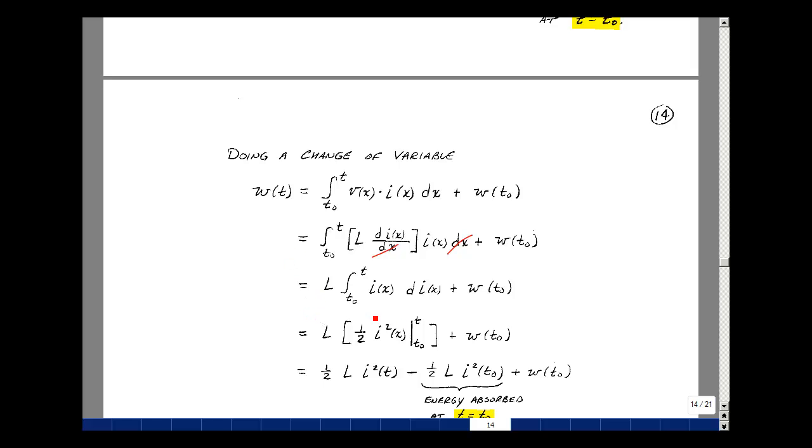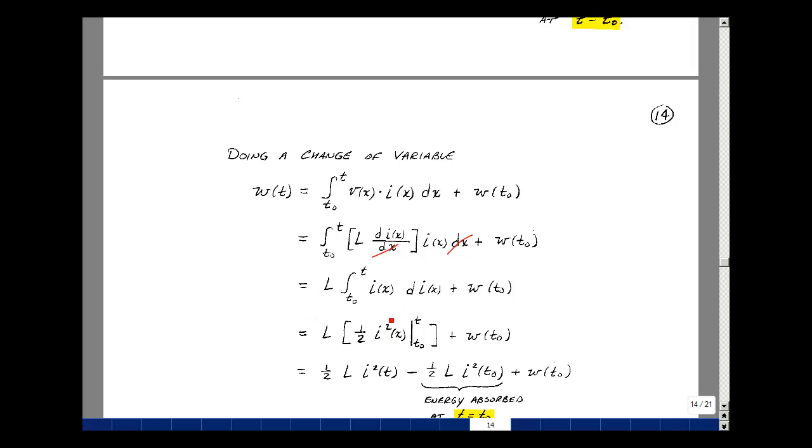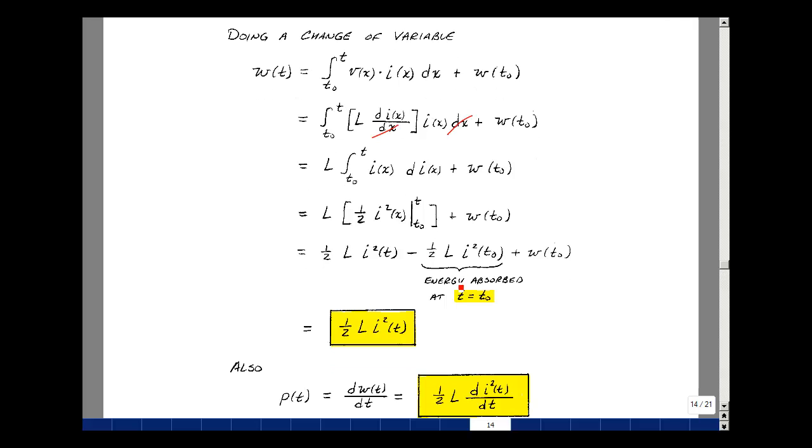We're going to integrate basically x dx. So now I have one half I squared of T times L and then I've got the same thing at T0 times L plus W of T0. Now what is this term equal to? This is the energy that's absorbed at T equals T0. That's also what this is and so these two cancel each other.